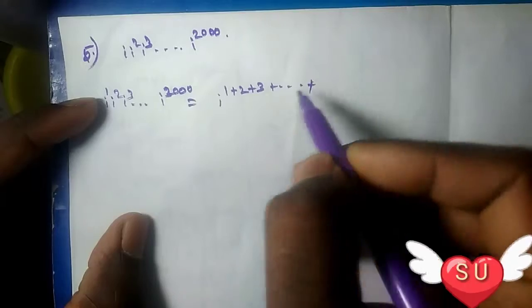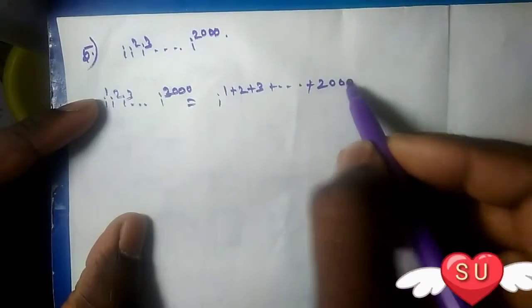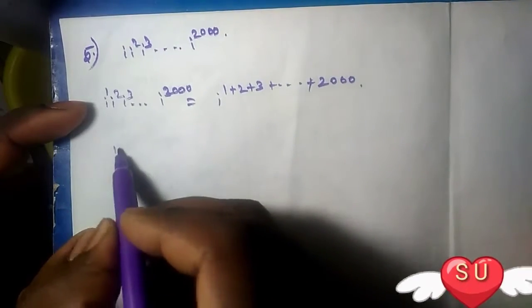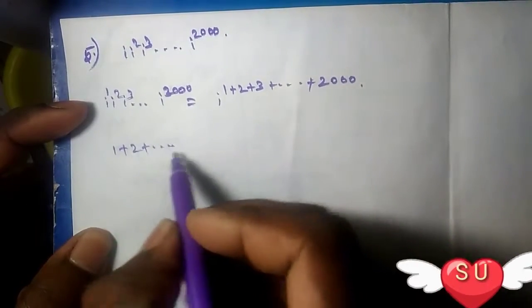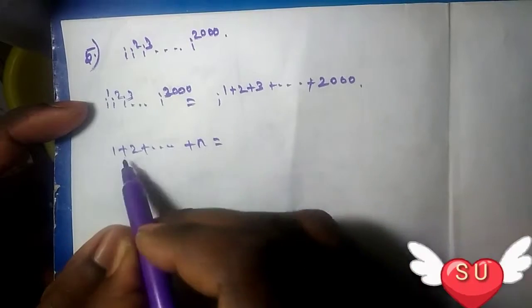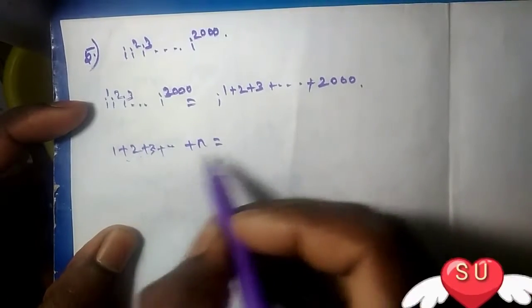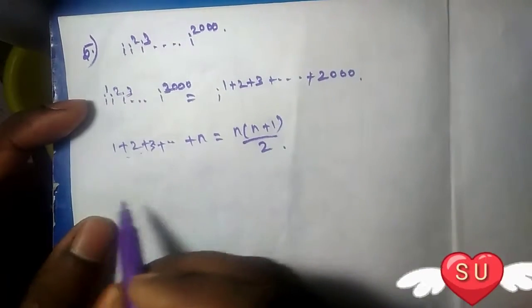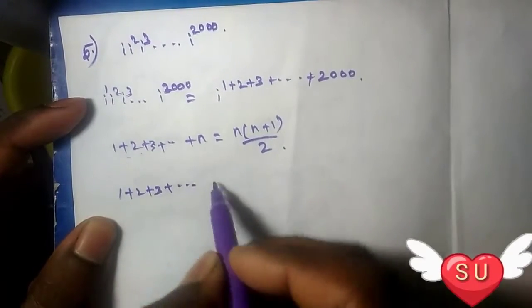So 1 plus 2 plus up to 2000. We can use the formula for natural numbers: 1 plus 2 plus 3 plus up to n equals n into n plus 1 divided by 2. So here I have 1 plus 2 plus 3 plus up to 2000.